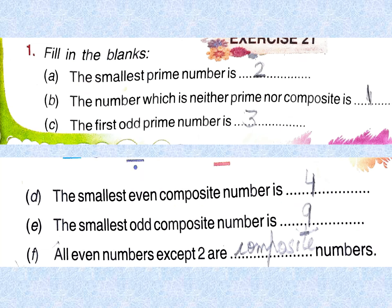Now we will do some fill-in-the-blank exercises. The smallest prime number is 2, which is also the only even prime number. The number which is neither prime nor composite is 1. The first odd prime number is 3. The smallest odd composite number is 9. All even numbers except 2 are composite numbers.